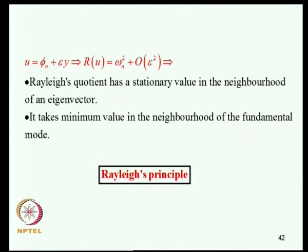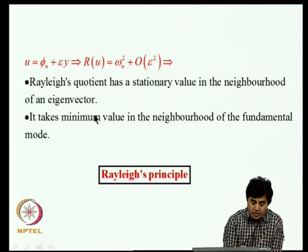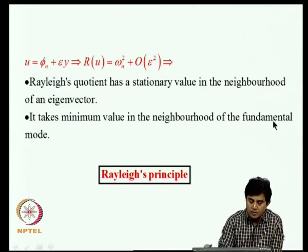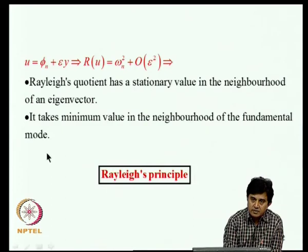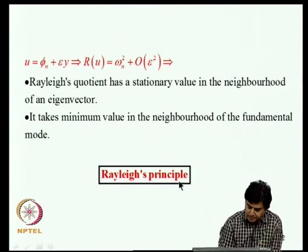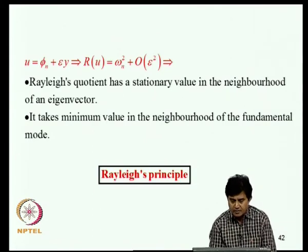This means Rayleigh's quotient has a stationary value in the neighborhood of an eigenvector, and takes its minimum value in the neighborhood of the fundamental mode. This result is known as Rayleigh's principle and will be useful in subsequent formulations.